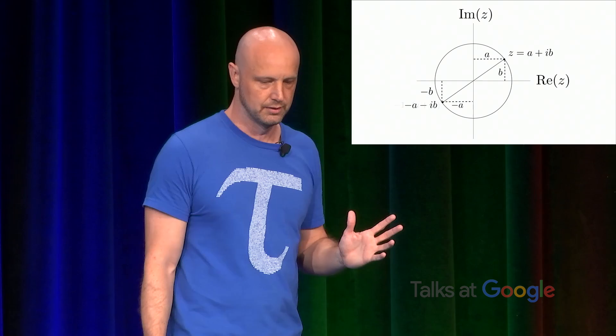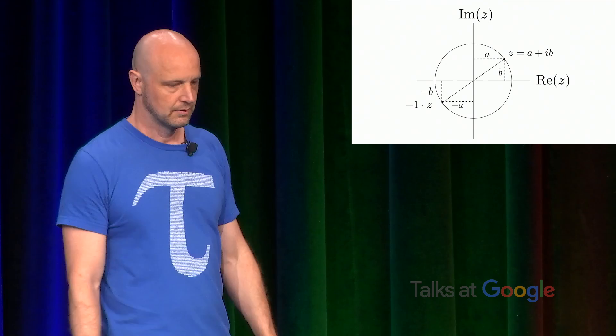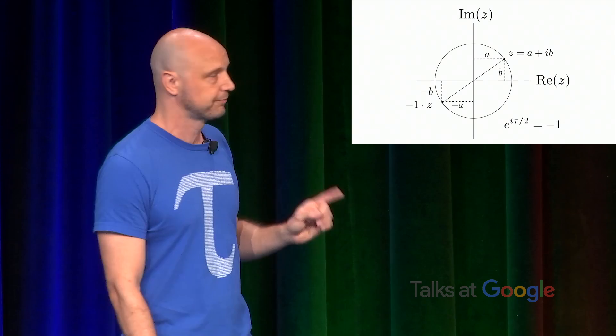So in other words, what this equation is telling us is that a rotation by half a turn in the complex plane is the same as multiplying by negative one. So the original form of Euler's identity has a transparent geometric meaning that's obscured when we write it in terms of pi.